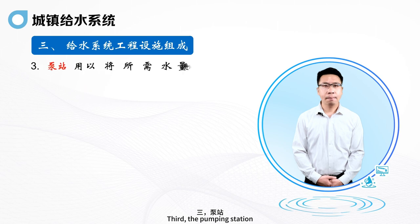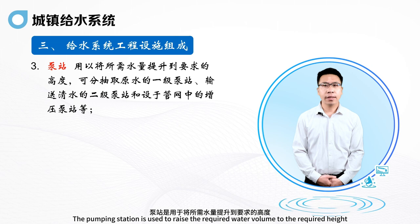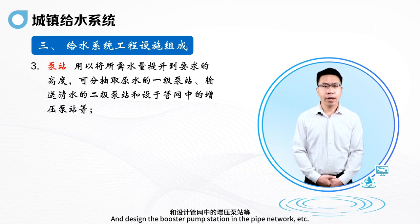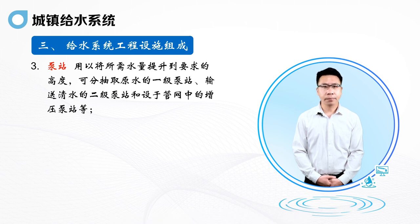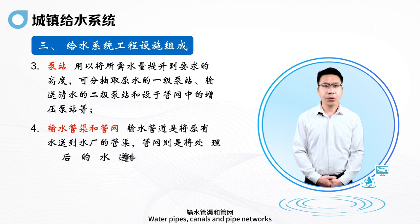Third, the pumping station, which is used to raise the required water volume to the required height. The primary pumping station is capable of pumping raw water separately. The secondary pumping station is for conveying clean water, and booster pump stations can also be designed within the pipe network. Fourth, water pipes, canals and pipe networks.